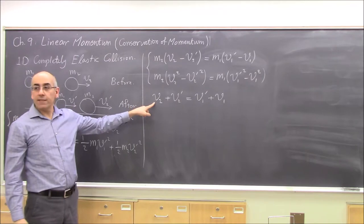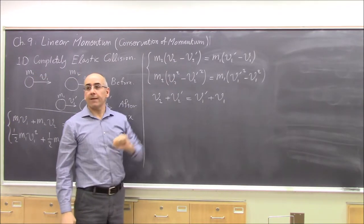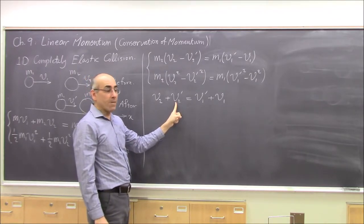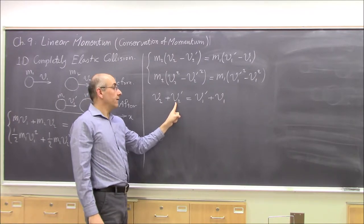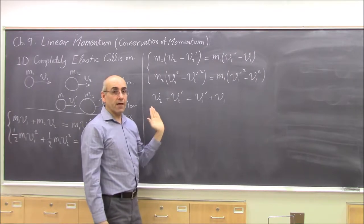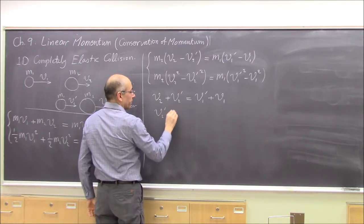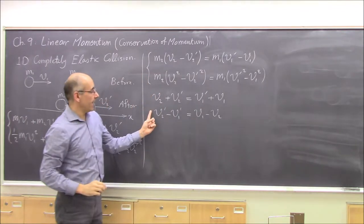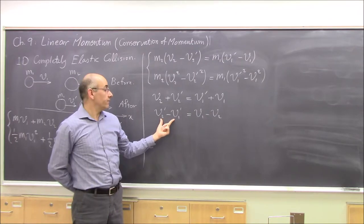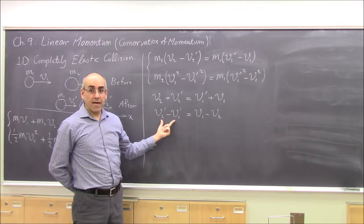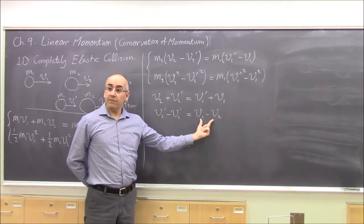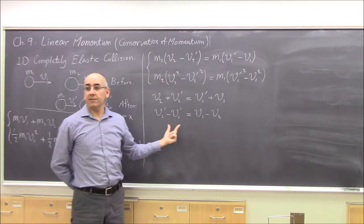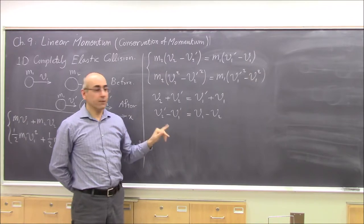Rearranging this result with primes on one side and non-primes on the other gives V2 prime minus V1 prime equals V1 minus V2. This is a remarkable result: V2 prime minus V1 prime is the relative velocity after the collision, and V1 minus V2 is the relative velocity before. So in an elastic collision, the relative speed is preserved. We will use V2 prime equals V1 prime plus V1 minus V2 to substitute into the momentum equation.